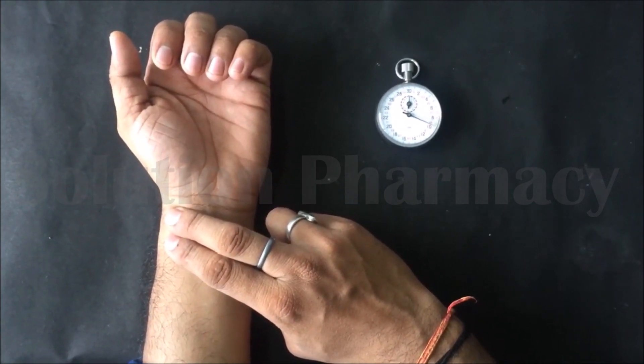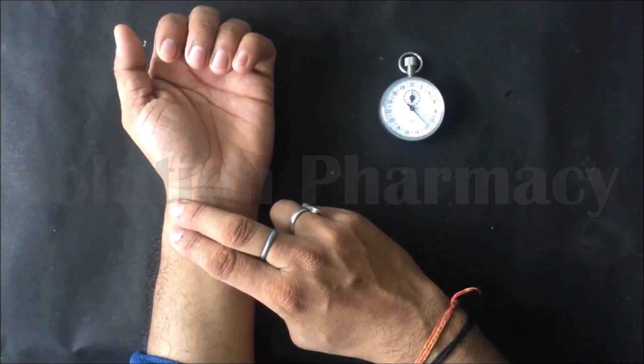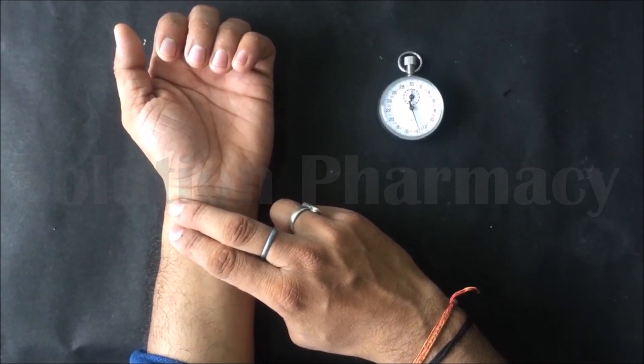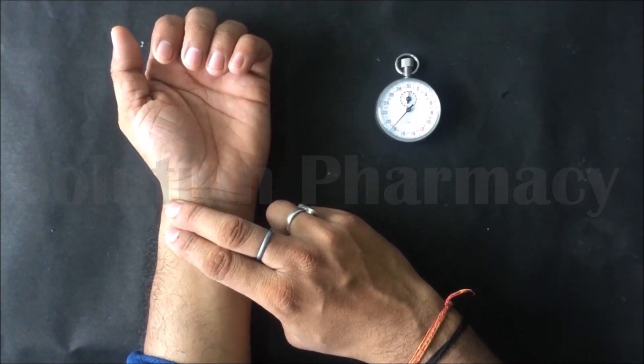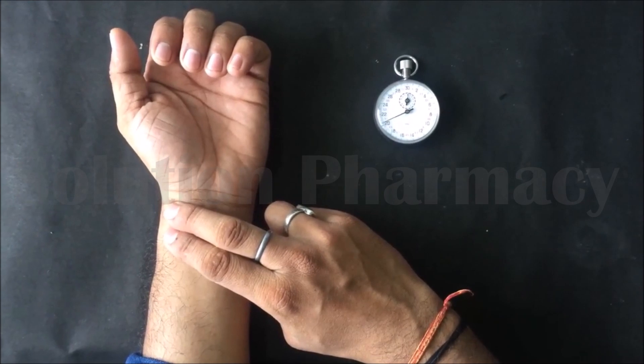For 10 seconds, multiply the pulse count by 6 to get the pulse rate per minute. For 20 seconds, multiply the pulse count by 3 to get the pulse rate per minute.